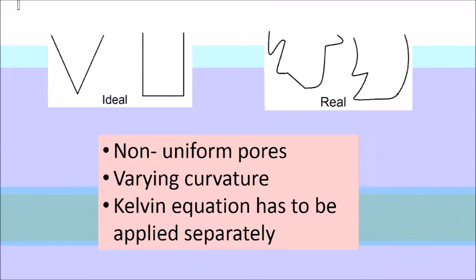However, in real cases, the pore geometry is not always uniform. This is due to irregular shape or dust formation inside the pores. Curvature of meniscus will vary at each position of the tube. Thus, Kelvin equation has to be applied separately to study the behavior of meniscus.